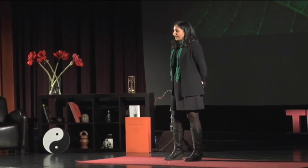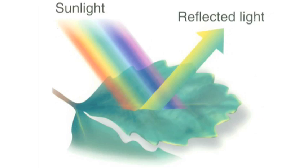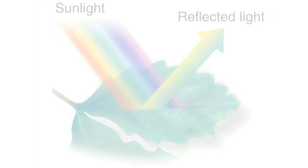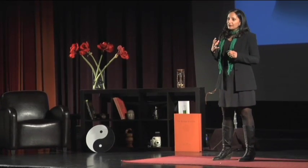Pigments are really interesting things. These are the things that change the appearance of light by selectively absorbing certain wavelengths and rejecting others. Chlorophyll is a pigment that absorbs the wavelengths in red and blue, and rejects the green. So it's a kind of selective filter that absorbs things that it's not, to define what it is.